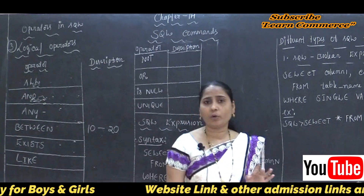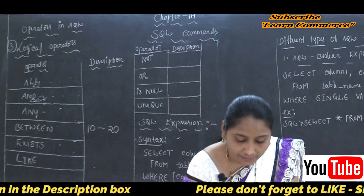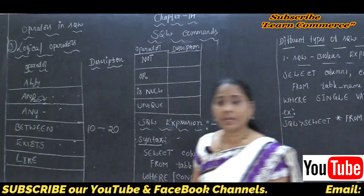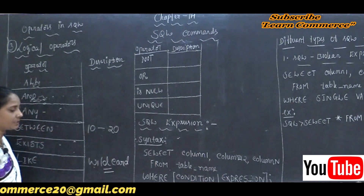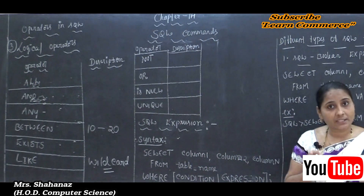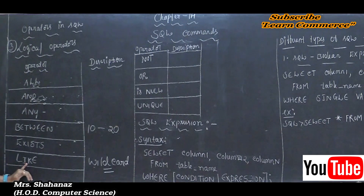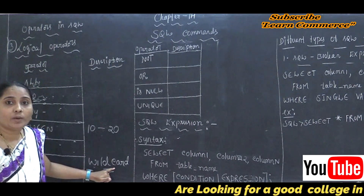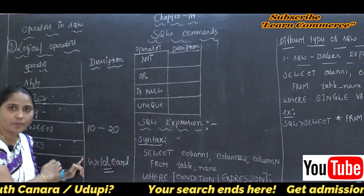The next thing is about the LIKE Operator. The LIKE Operator is used to compare a value to similar values using wildcard operators. The symbol of the wildcard operator we are using is the percent sign. Whatever value we want to compare — whether such value is equal or not — is done using the LIKE Operator, comparing a value to a similar value using wildcard operators.